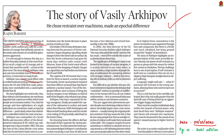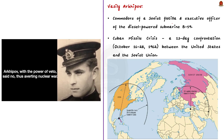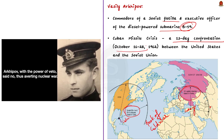Arkhipov was commander of a Soviet flotilla and executive officer of the diesel-powered submarine B-59, which was submerged near Cuba in October 1962. Here, a flotilla is nothing but a small fleet of ships. 1962 was the time of the Cuban Missile Crisis where both the US and Soviet Union were at the peak of their Cold War. The Cuban Missile Crisis was a 13-day confrontation between the US and Soviet Union concerning American ballistic missile deployment in Italy and Turkey, with consequent Soviet ballistic missile deployment in Cuba.